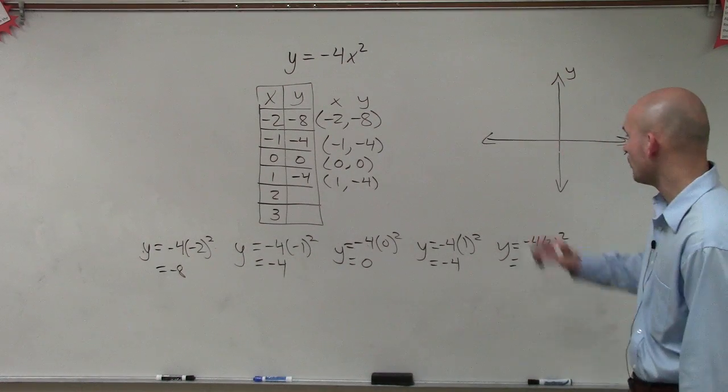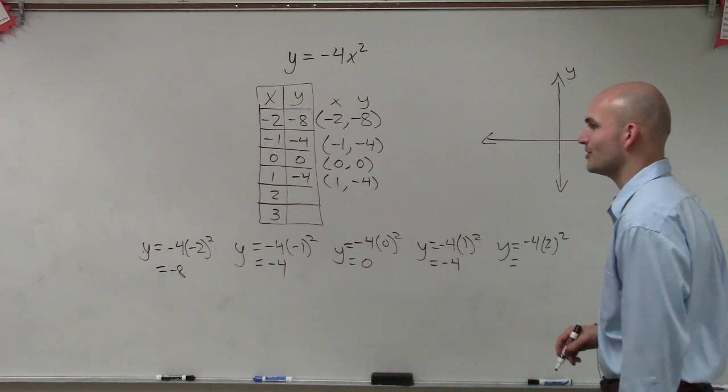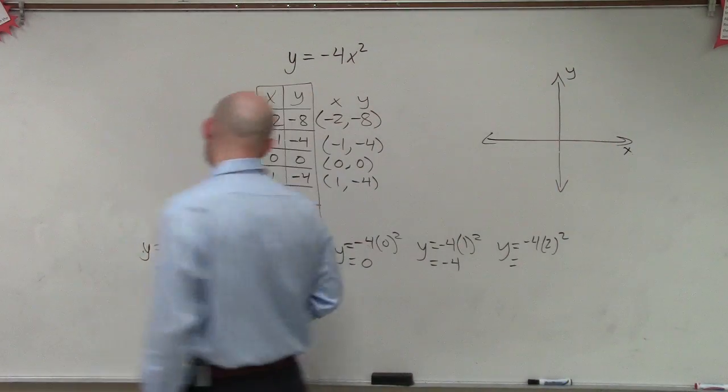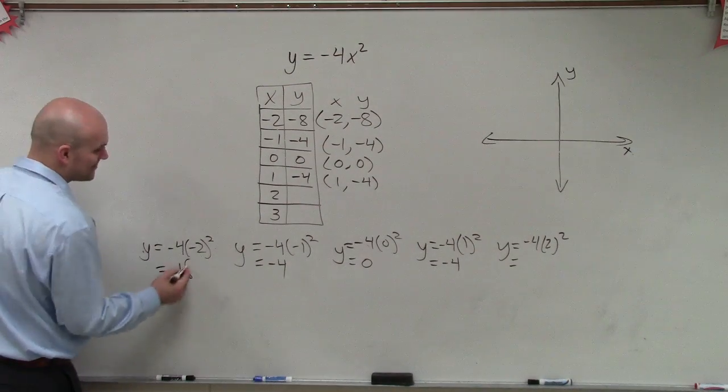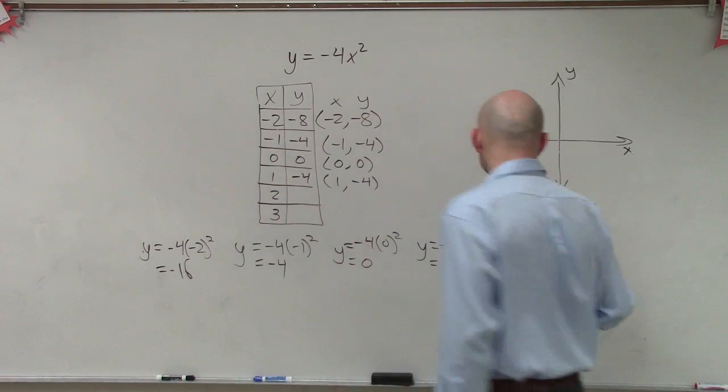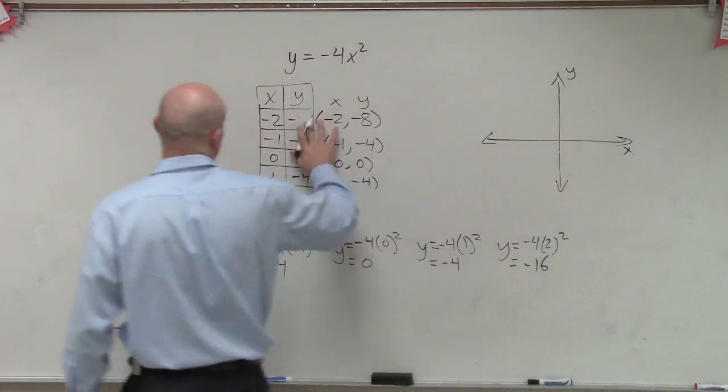So then we have y equals negative 4 times 2 squared. Well, 2 squared is 4. 4 times negative 4 is negative 16. I'm always going to be making mistakes. 2 squared is 4. 4 times negative 4 is a negative 16.